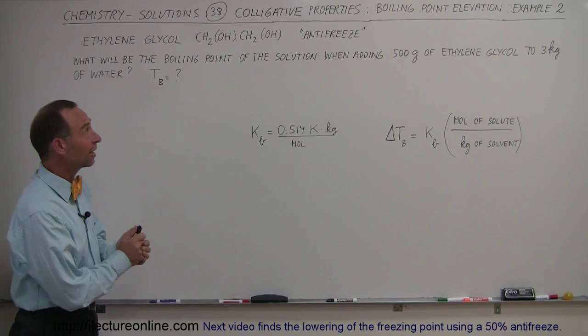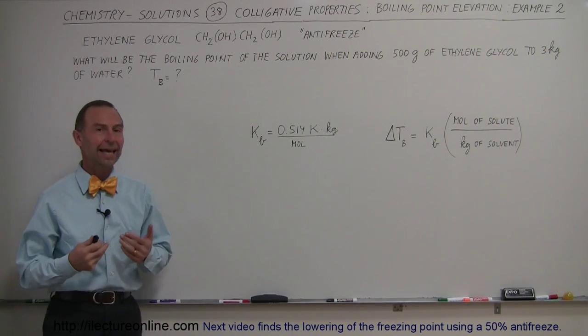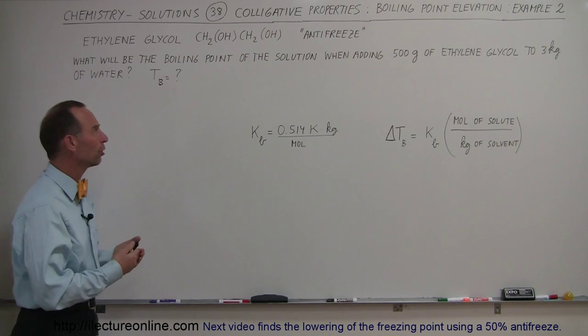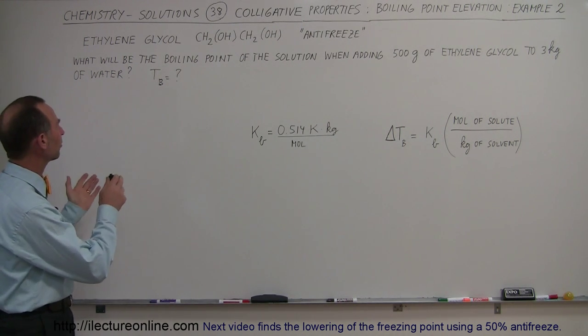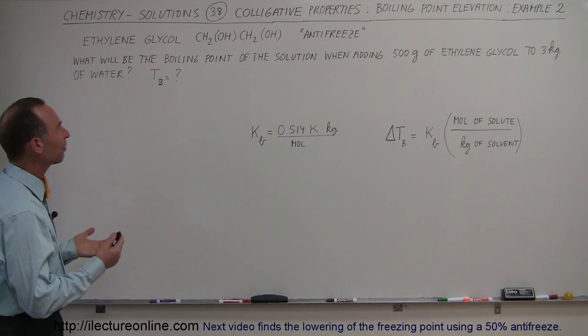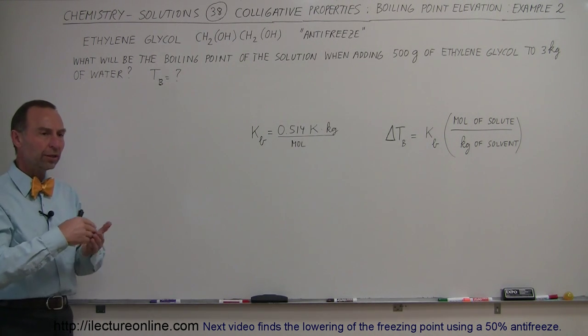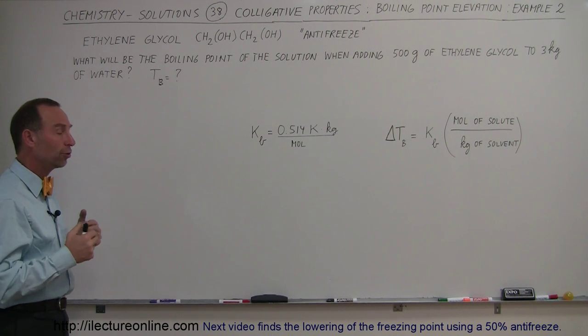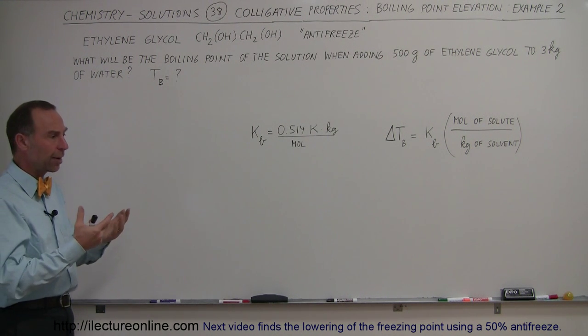Welcome to our lecture online, and now for our second example of how we can calculate the elevated boiling point of a solution when we add a solute to it. In this case, we're going to add ethylene glycol, which is an antifreeze. So we add that to water, it should raise the boiling point of water, which is a good thing in your radiator on very hot weather.